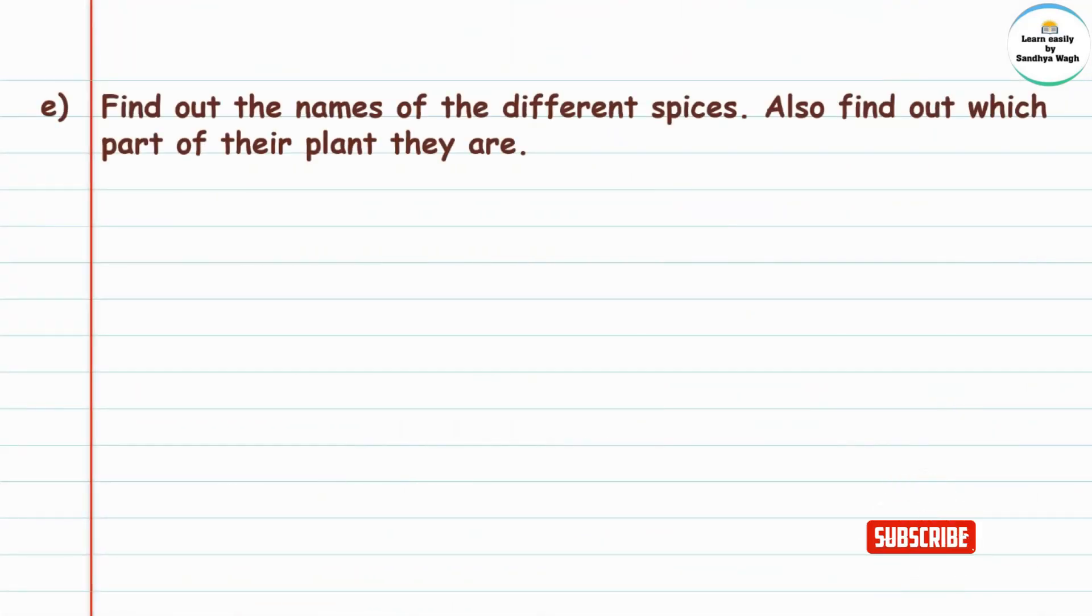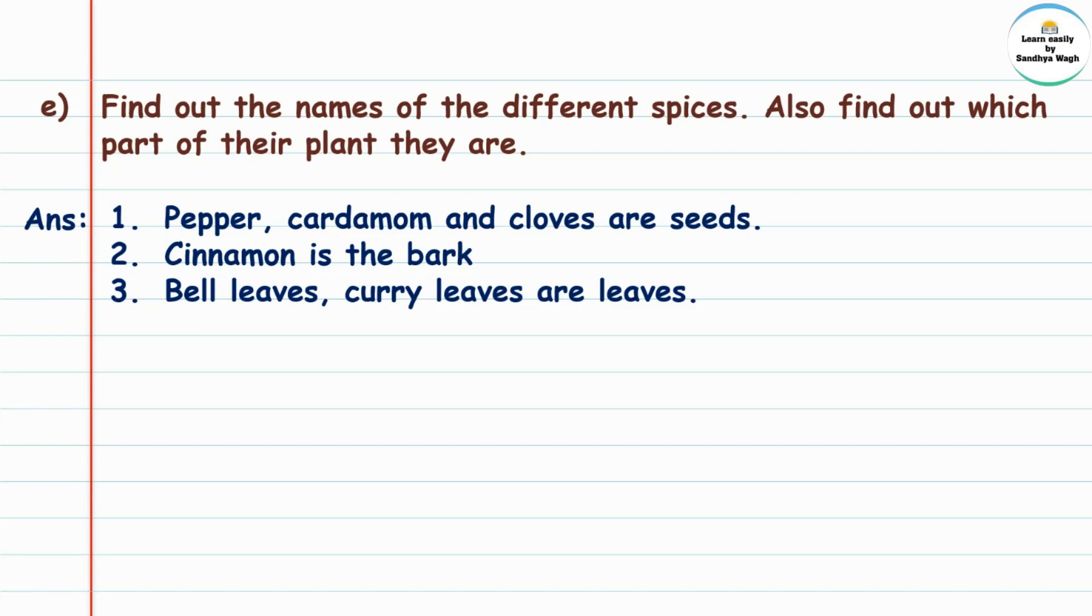Question e: Find out the names of different spices and which part of their plant they are. Answer: Pepper, cardamom, and cloves are seeds. Cinnamon is bark. Bay leaves and curry leaves are leaves.